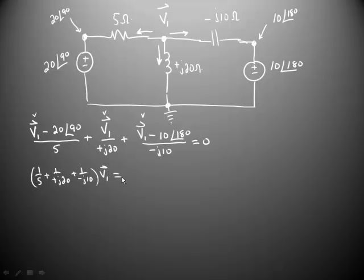On the right hand side of the equation, we're going to move the 20 at angle 90 divided by 5 to the right hand side, and it turns positive, 20 at angle 90 divided by 5,